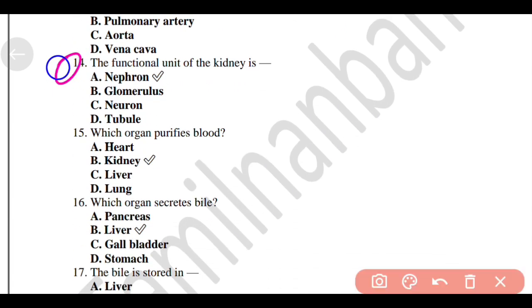The functional unit of the kidney is Option A, Nephron. Which organ purifies blood? Option B, Kidney.